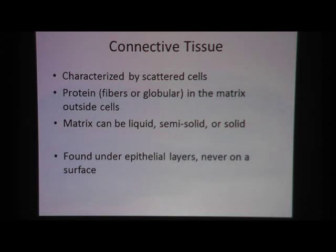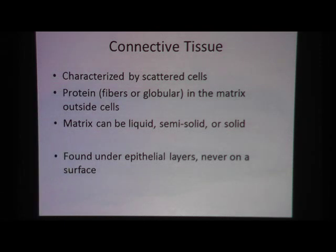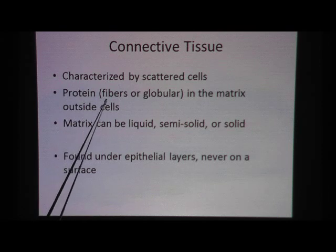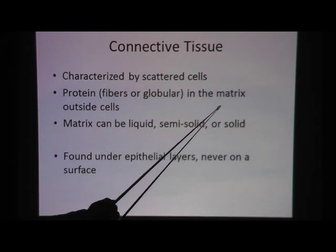Connective tissue is characterized by scattered cells. Unlike epithelial tissue, which you've already seen, in connective tissue don't expect the cells to be packed — don't expect the cells to be next to each other. Sometimes the cells have a lot of space, a lot of gap in between them. In that gap, in that space between the cells, you will find proteins. The space outside the cells is called matrix.